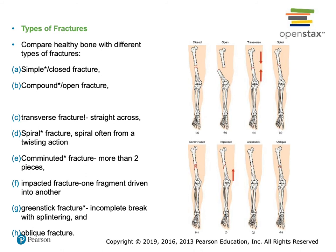A greenstick fracture gets its name from what happens when you grab a live branch off a tree and twist it — the branch doesn't snap in half because the inside is green. It splits along the bark, you can see the lines and the inside, but it's not a complete break and there's often a splinter sticking out. An oblique fracture is a diagonal line going from one side to the other but doesn't continue around like a spiral staircase.